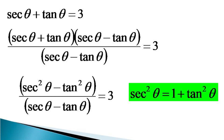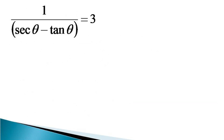The trigonometric identity sec²θ equals 1 plus tan²θ is used for the numerator on the left hand side, which makes the numerator unity, and the condition becomes 1 divided by (sec θ minus tan θ) is equal to 3.